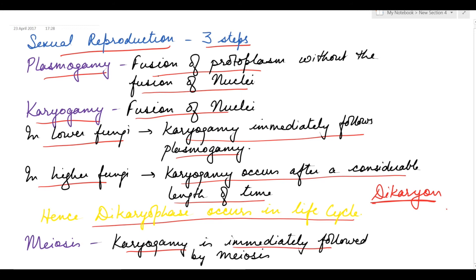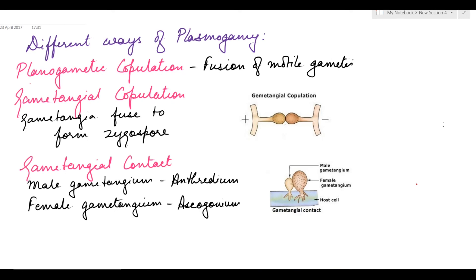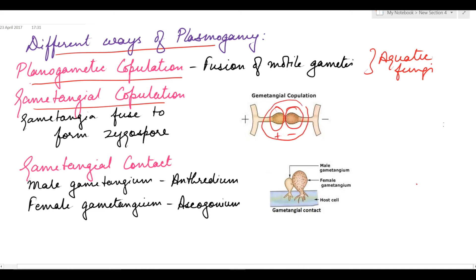The different ways in which plasmogamy occurs in fungi are: first, planogametic copulation, seen in aquatic fungi, which is fusion of motile gametes. Next, gametangial copulation, where two gametangia of opposite strains fuse with each other to form the zygospore. Next is gametangial contact, where the male gametangium is referred to as antheridium and the female gametangium is referred to as ascogonium. When the antheridium and ascogonium come in contact, plasmogamy occurs.